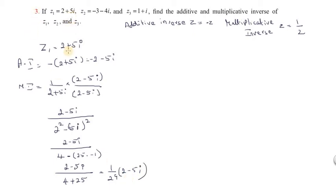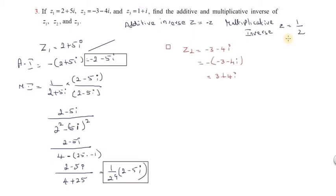This is Z1. For Z2, the additive inverse: since Z2 equals minus 3 minus 4i, the additive inverse is equal to plus 3 plus 4i — the minus is multiplied making the signs flip, so additive inverse equals 3 plus 4i.